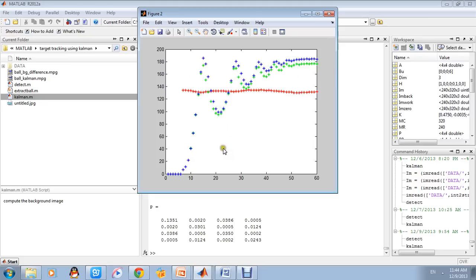However, when the ball bounces from the floor, there is a delay in the prediction. Here, here, here, and here. But the delay soon vanishes.